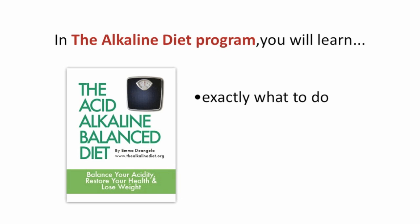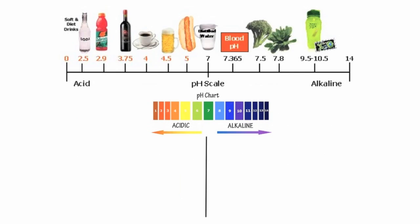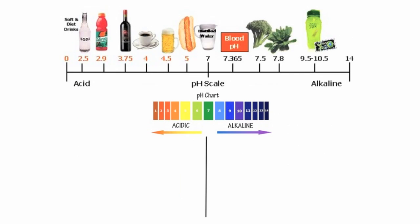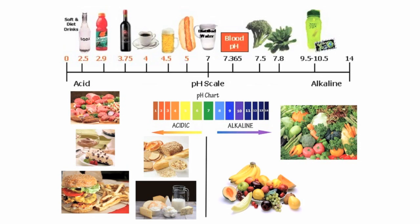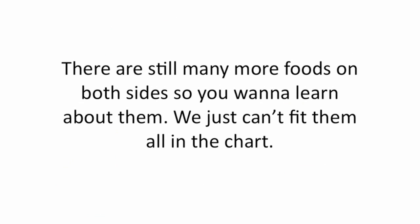In the Alkaline Diet Program, you will learn exactly what to do, exactly what to eat, exactly when to eat, and exactly how to eat. Remember your body's ideal pH level of 7.35 to 7.45? The foods on the left are the acidic foods that you want to reduce and avoid. The foods on the right are a must to help you successfully lose weight and stay healthy. These are just a few of the examples to give you an idea of what eating alkaline is all about. There are still many more foods on both sides, so you want to learn about them. We can't just fit them all into the chart.